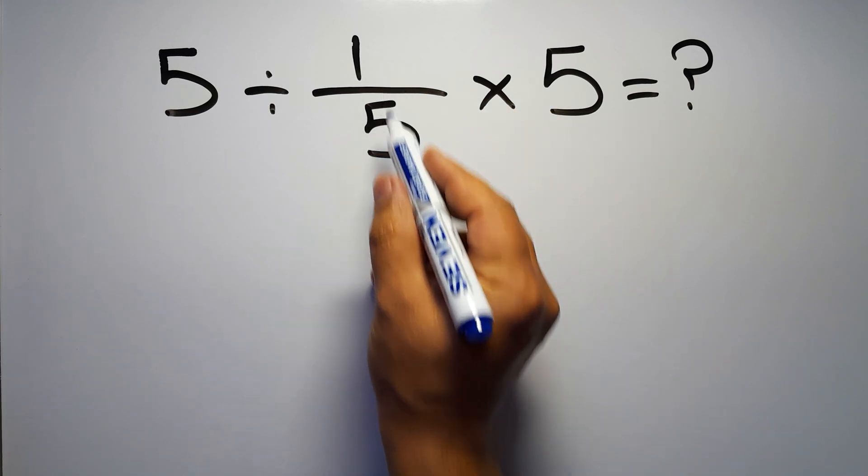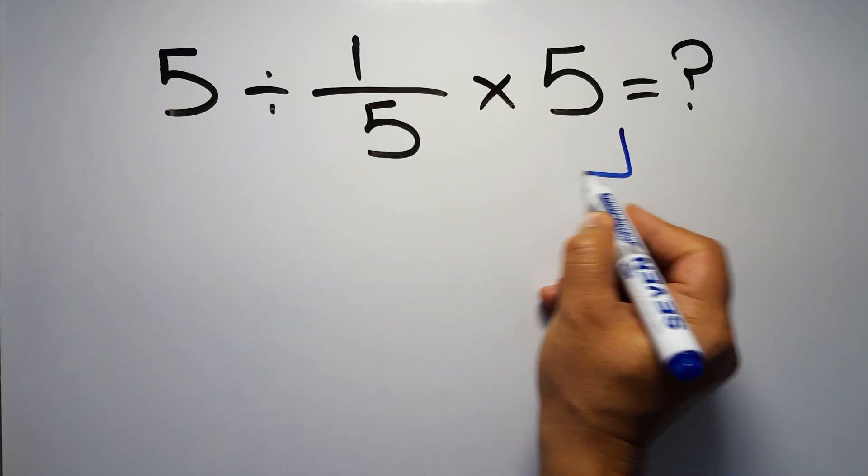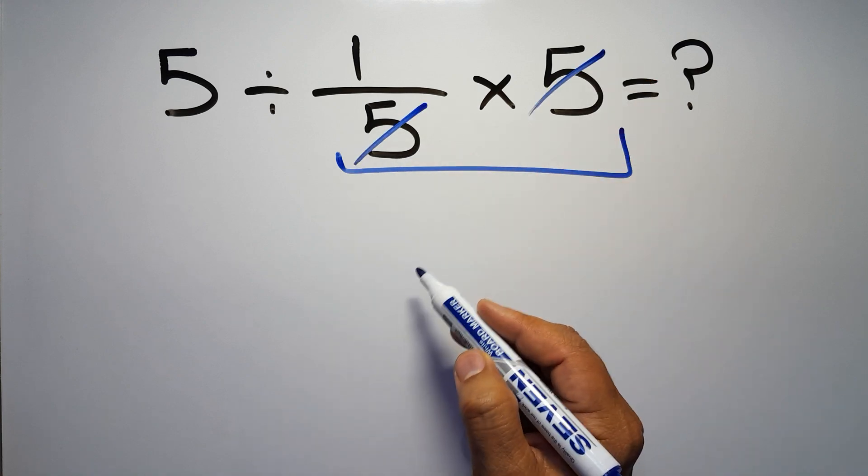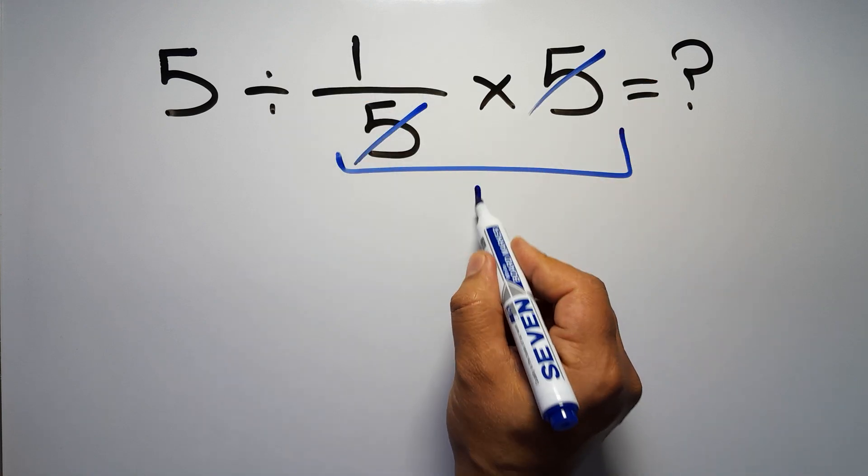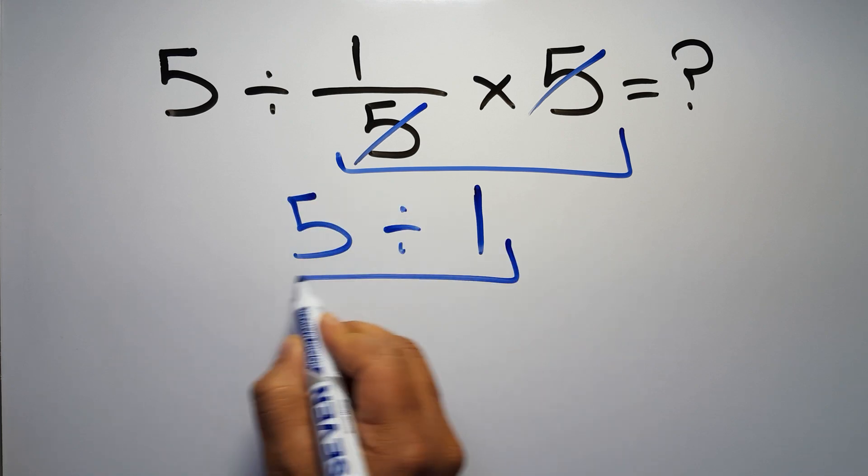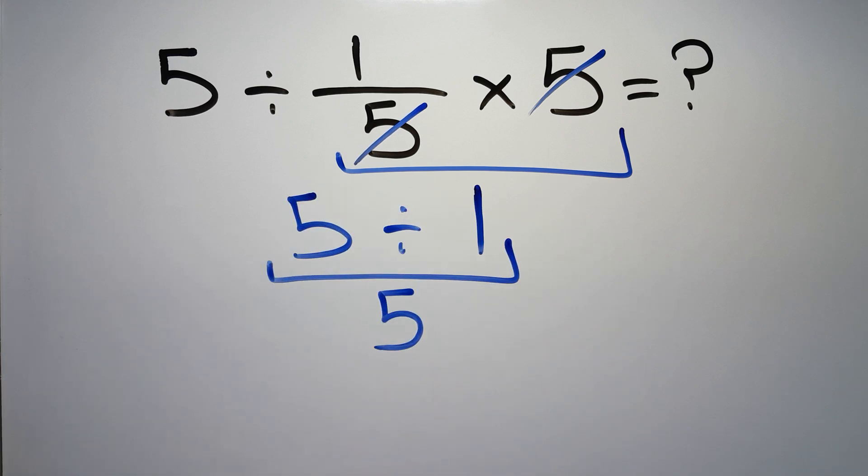First we do this multiplication, 1 over 5 times 5. We can easily cancel this 5 and this 5, so here we have just 1, and the 5 divided by 1 equals 5. But this answer is not correct because